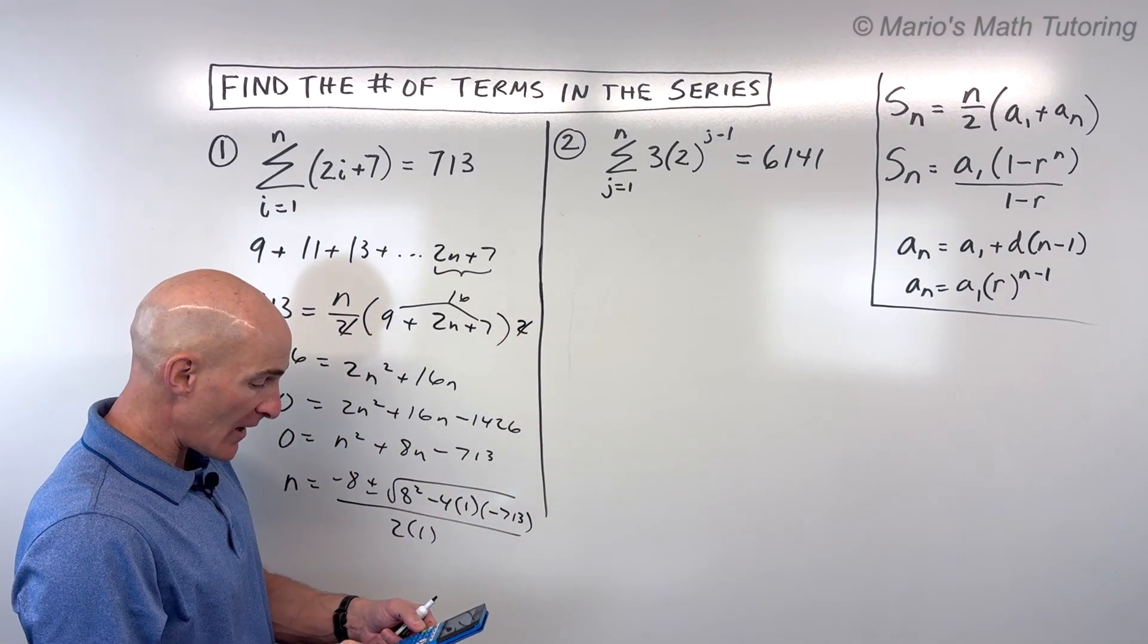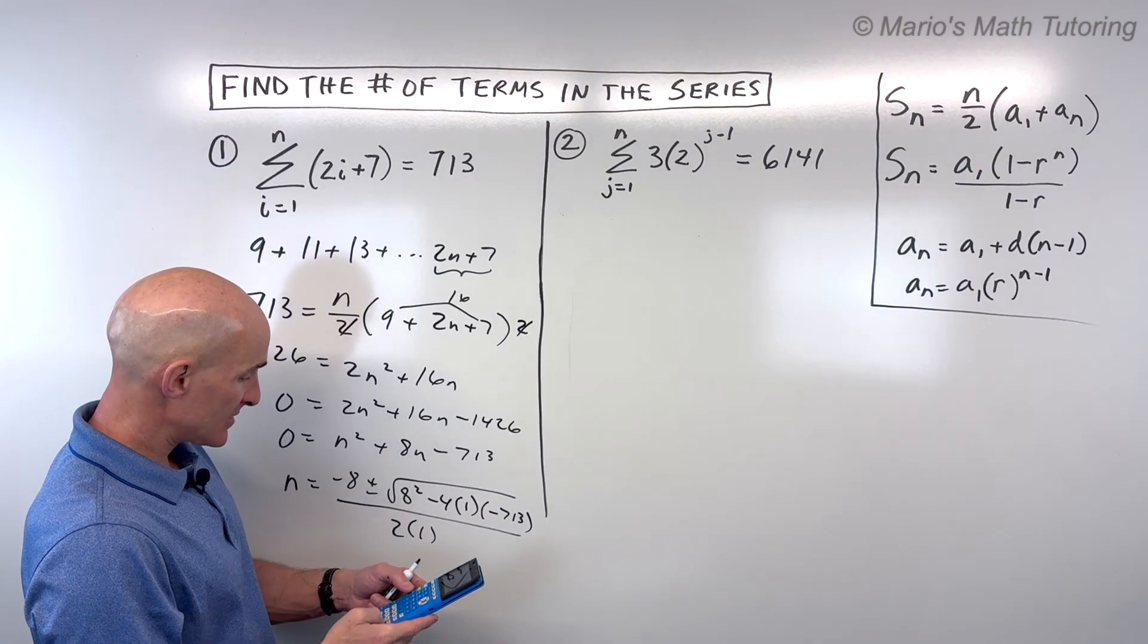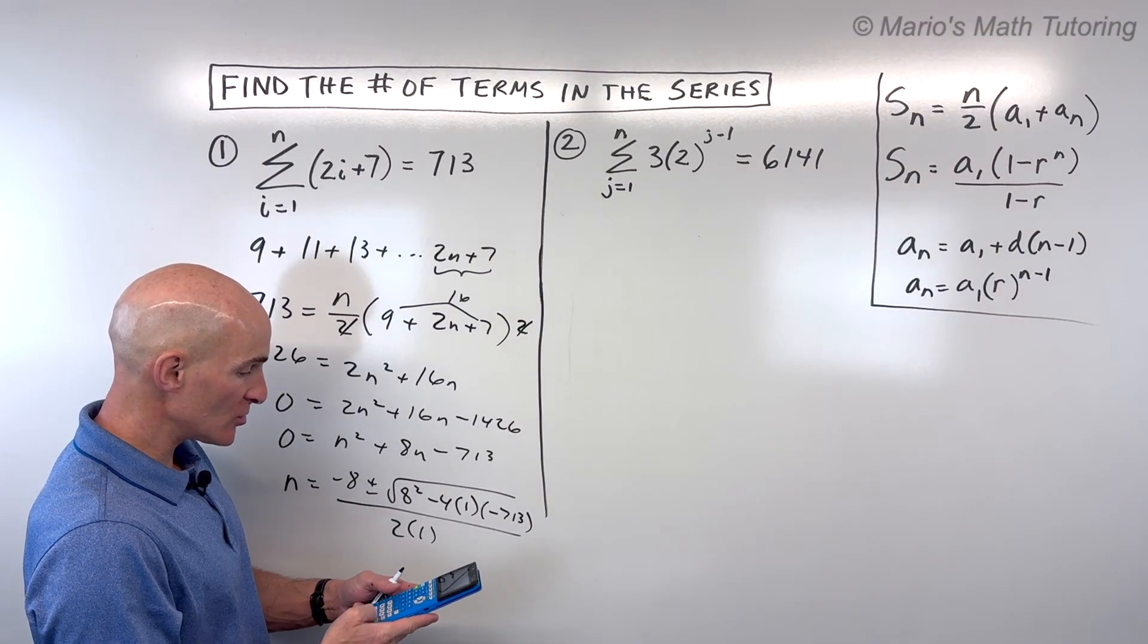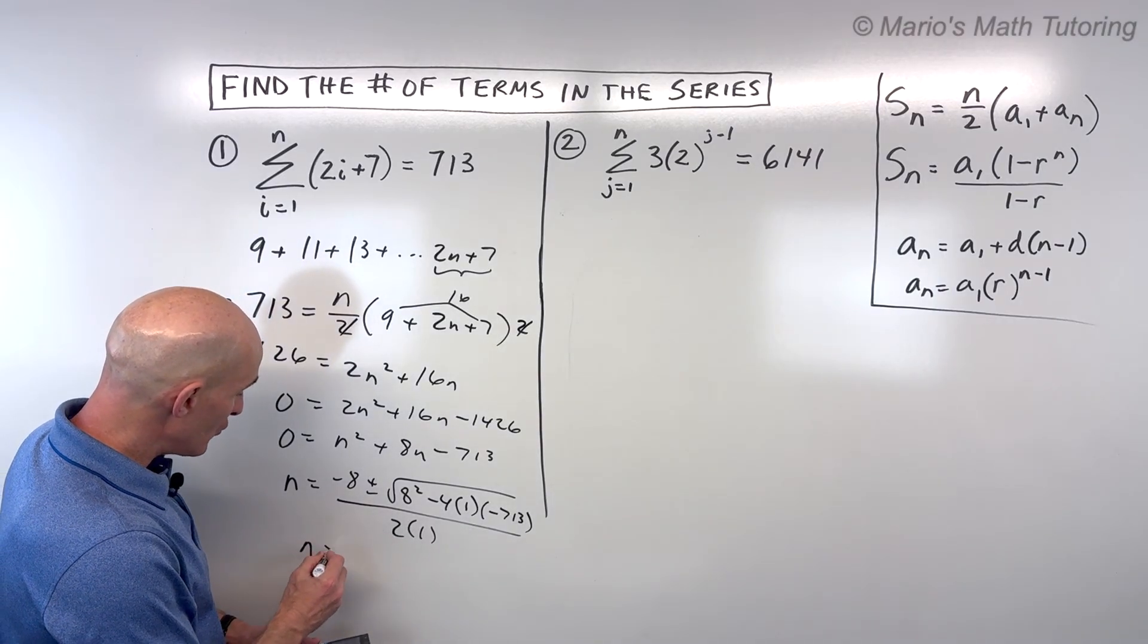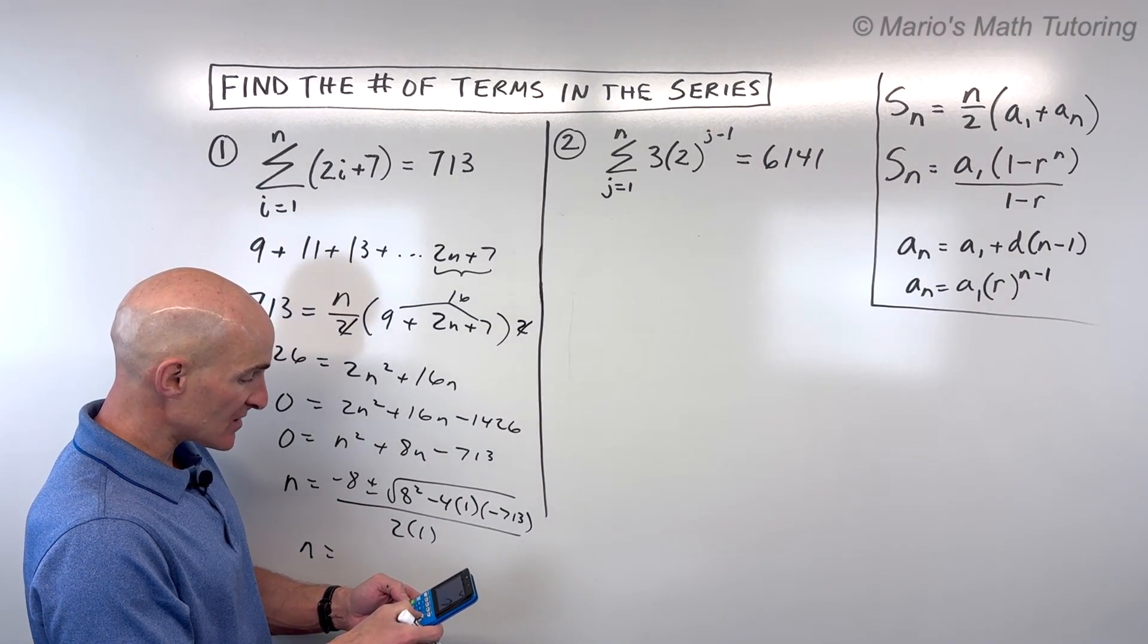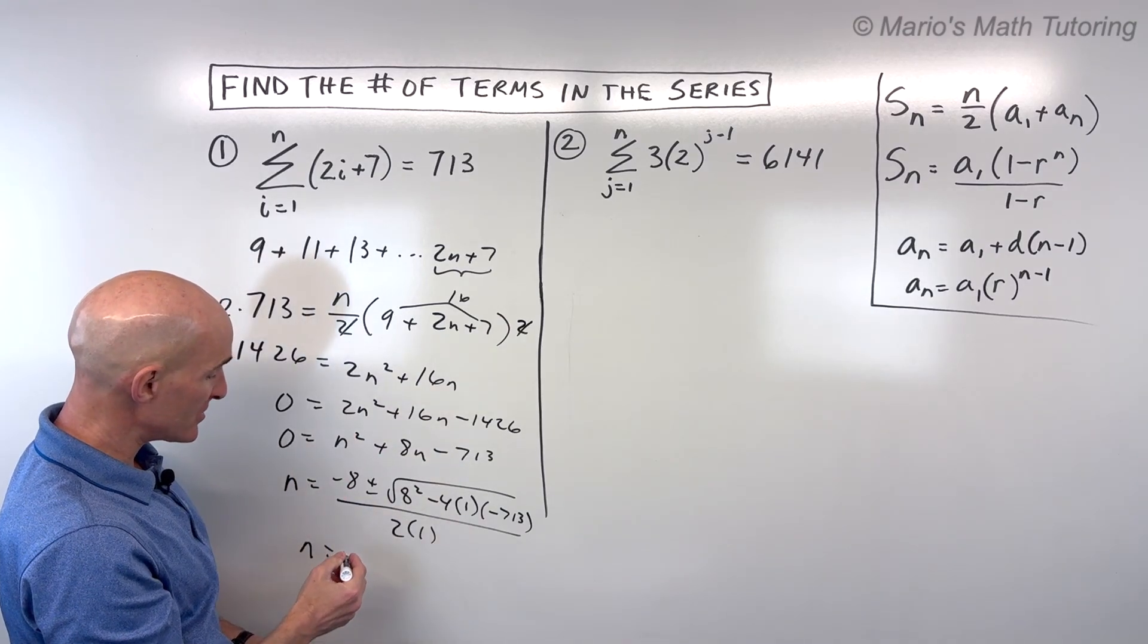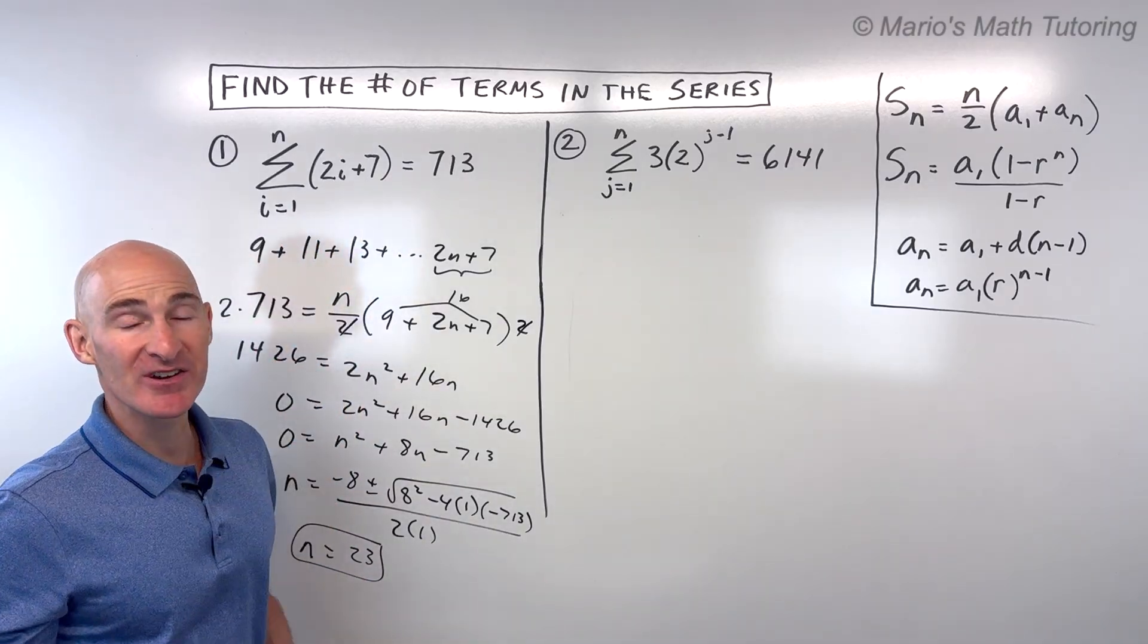So what do we have here? We've got negative 8 plus the square root of 8 squared minus 4 times 1 times negative 713, all divided by 2 times 1, which is 2. That comes out to 23. Or if I was to do negative 8 minus, that's going to give us a negative quantity here. It comes out to negative 31, which doesn't make sense. We can't have negative 31 terms here. So n equals 23 tells us that there's 23 terms in this series here.